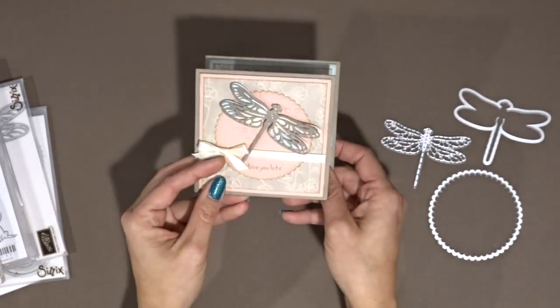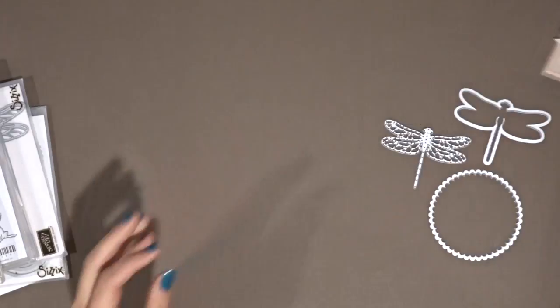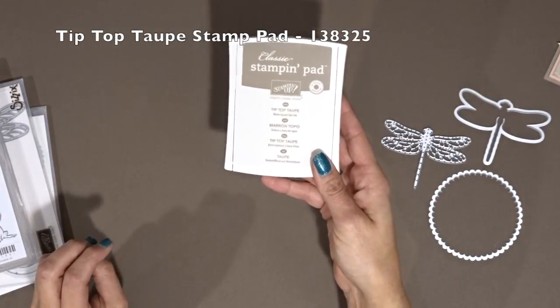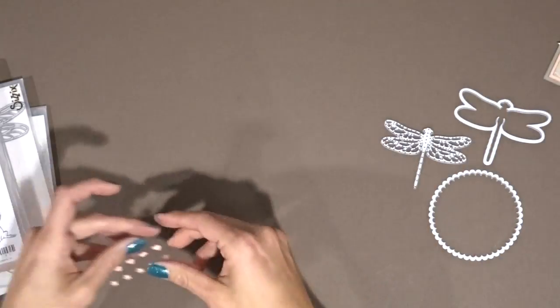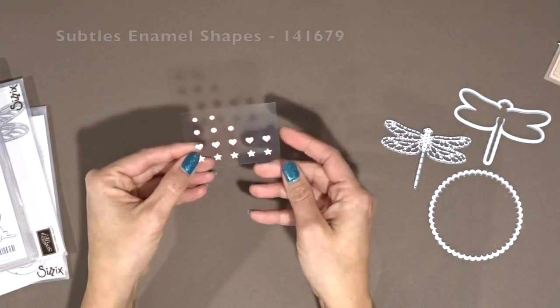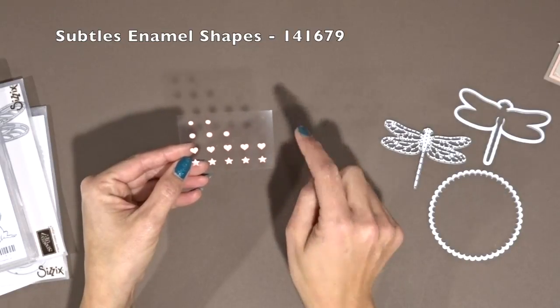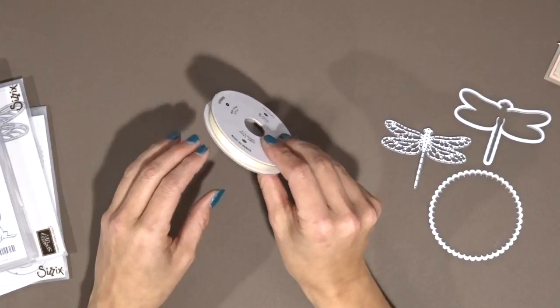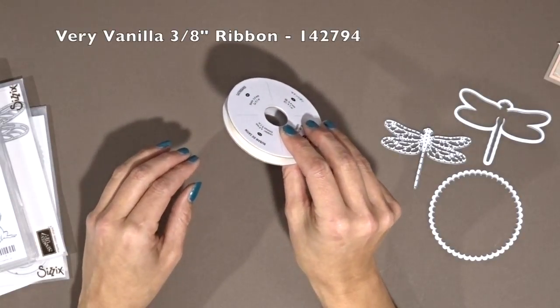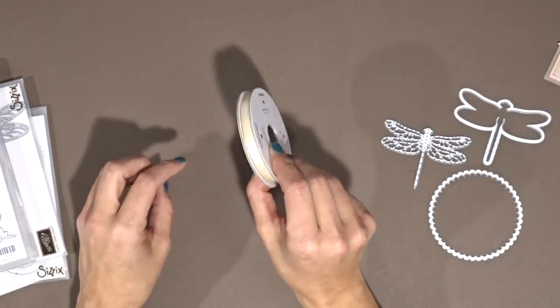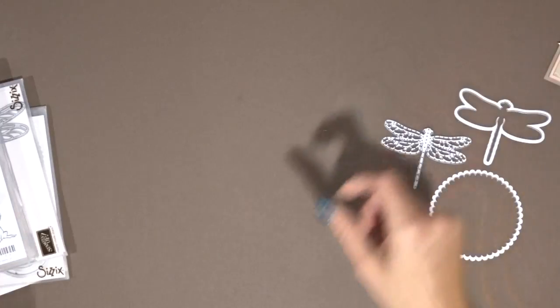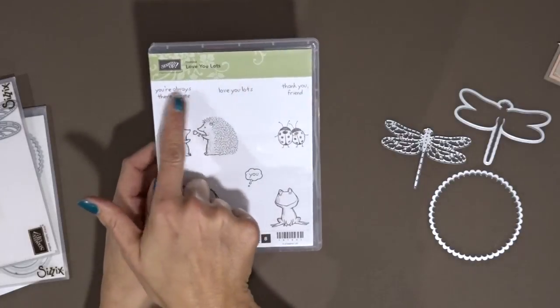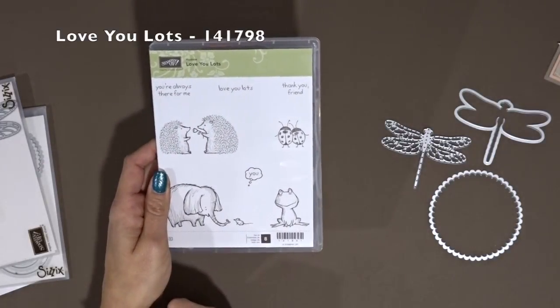Let's get on to it. What you're going to need is tip top taupe for ink, and I'm using the blushing bride enamel from the subtle enamel shapes and this very vanilla ribbon. It's on the same page as the falling in love designer series paper. The stamp set that I used for the sayings is the love you lots hostess set.